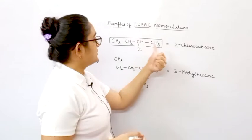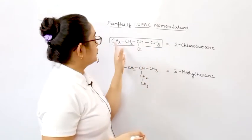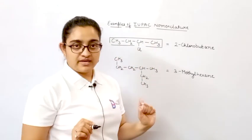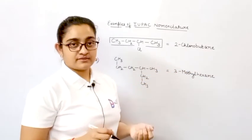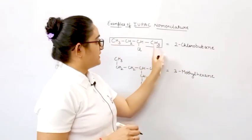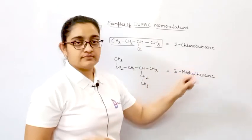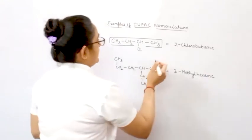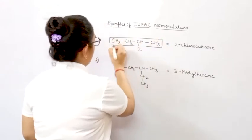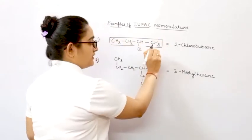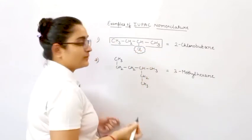We found this is the longest carbon chain. The root word is 1-2-3-4, meaning 4 carbon atoms — so 'bute.' For the primary suffix, all carbon atoms are single bonded — alkane system, 'ane' — giving us butane. Now, the chlorine over here is acting as a substituent. There may be other functional groups which can act as substituents, but in this example, chlorine is acting as a substituent.